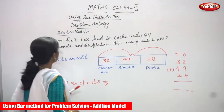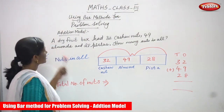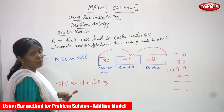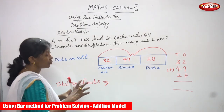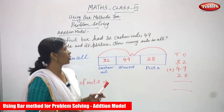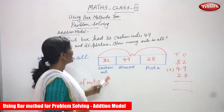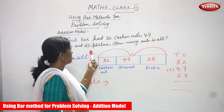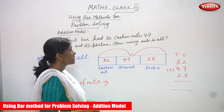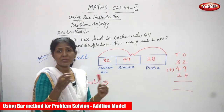Now we are going to do the second sum using the same addition model. A dry fruit box has 32 cashew nuts, 49 almonds, and 28 pistas. How many nuts in all? So this is the question. There is a dry fruit box — not a regular fruit box — and it has 32 cashew nuts, 49 almonds, and 28 pistas. You have to find how many nuts altogether.